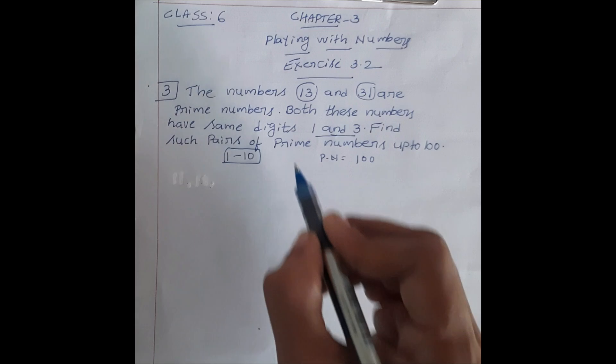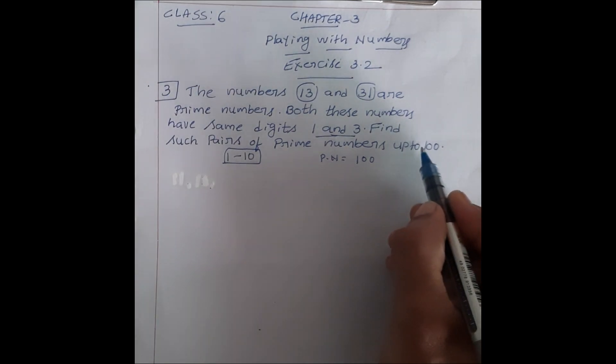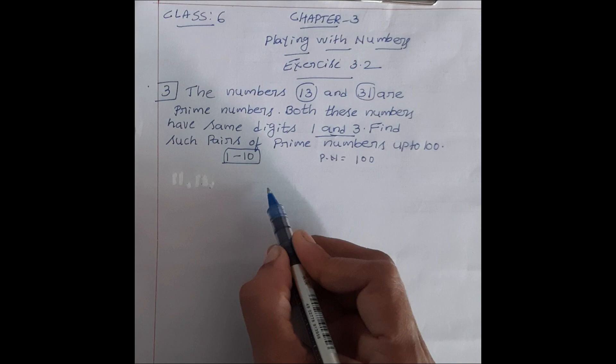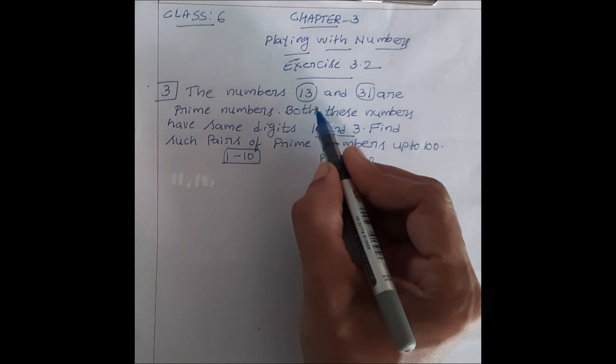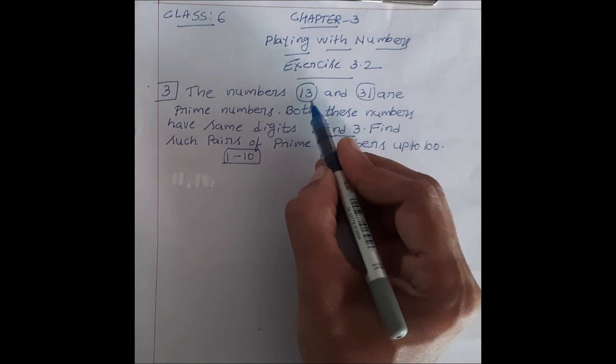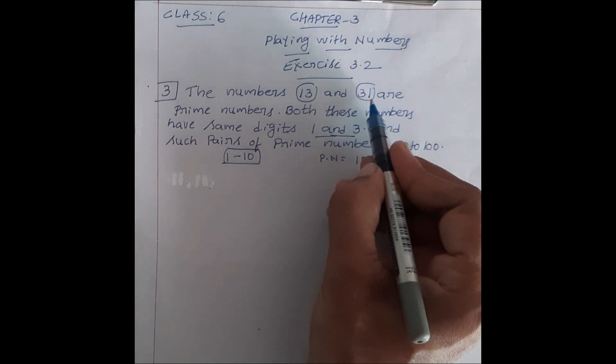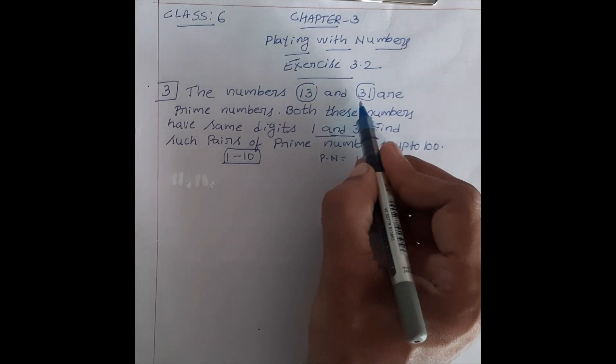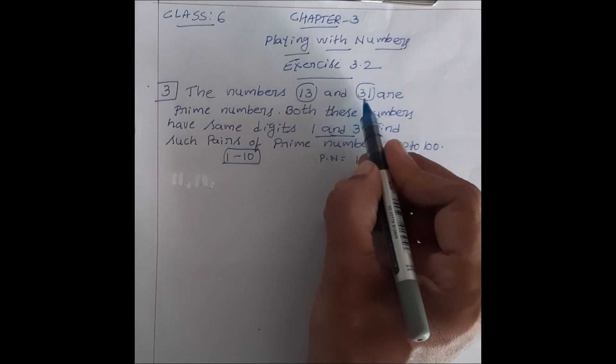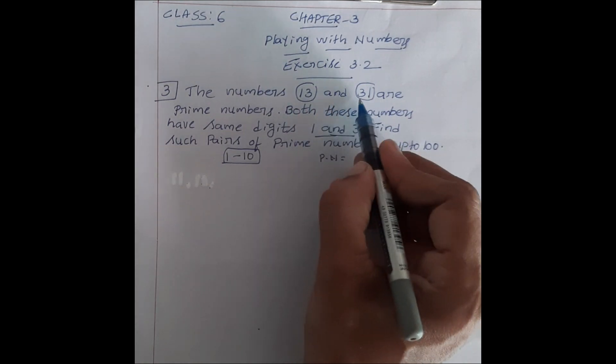Now question ka meaning aisa hai, hume till 100 tak prime numbers likhne ke hai. Prime numbers likhne ke baad, abhi idhar example diya hai, 1, 3 (13), 3, 1 (31). Idhar bhi hume 1, 3 number dekhne ko mil raha hai, idhar bhi hume 1, 3 number dekhne ko mil raha hai, lekin position alag hai.